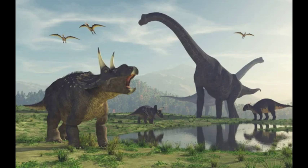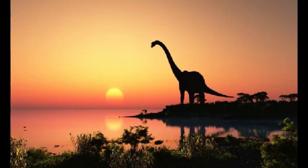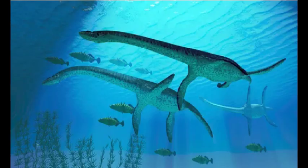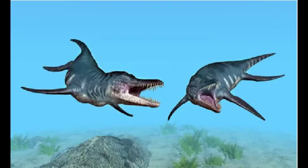Moving forward, we encounter the Devonian Extinction that took place around 359-375 million years ago. This event had a profound impact on marine organisms, particularly fish species, leading to the extinction of many. Changes in oxygen levels and climate fluctuations played a crucial role in this event.